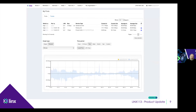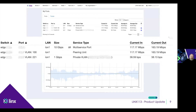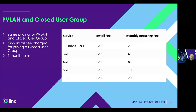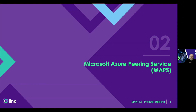On the portal you will see the traffic stats on the individual services. For a private VLAN, you would see it with the service name you gave on the order form. Pricing is relatively straightforward and the same pricing model applies to both private VLAN and closed user groups: a one-off install fee and then a recurring fee based on the bandwidth of the service. They all come with a one-month term, so there's no long contract.